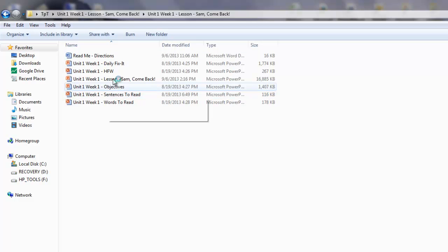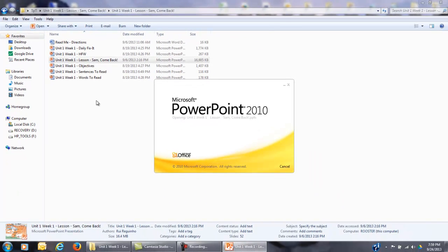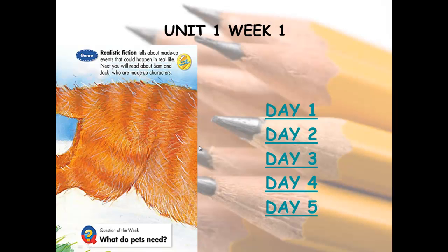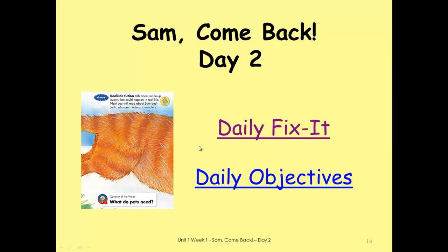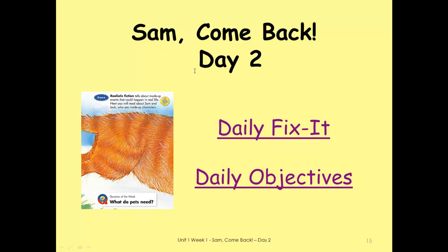So I'm going to open that folder up and now run the lesson. As I run the lesson, I'm going to show you that those problems were fixed. I'm going to go back to Day 2 and click Daily Fix-It, and you're going to see that the Daily Fix-It file will now open. This way you will not have to keep closing and opening files. Go to Day 2, go over the things, correct them, hit Escape and it comes back to the main lesson. I click Daily Objectives, it opens up, go to Day 2, go over the objectives, hit Escape, and I always stay with this file open so that it's one lesson without having to open and close all the files one by one.